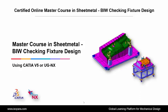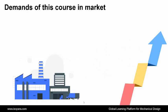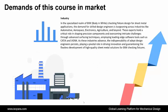First, we see the demands of this course in the market. In the specialized realm of BIW Checking Fixture Design for sheet metal applications, the demand for skilled design engineers is burgeoning across industries like automotive, aerospace, electronics, agriculture, and beyond. These experts hold a critical role in shaping precision components and overcoming intricate challenges through advanced surfacing techniques, employing leading-edge software tools such as CATIA and UGNX. As these industries advance, the indispensability of adept design engineers persists, playing a pivotal role in driving innovation and guaranteeing the flawless development of high-quality sheet metal solutions for BIW Checking Fixtures.